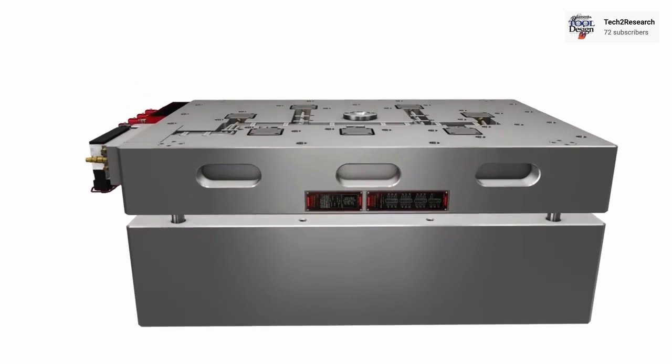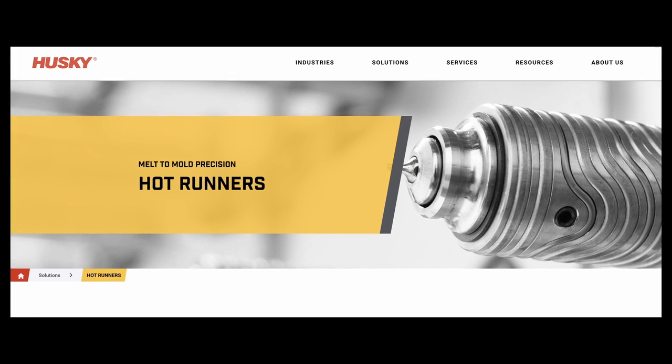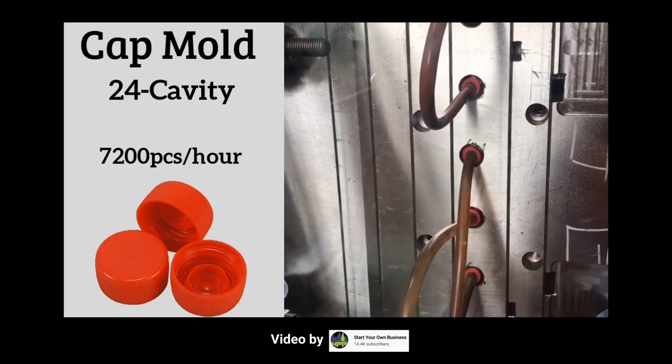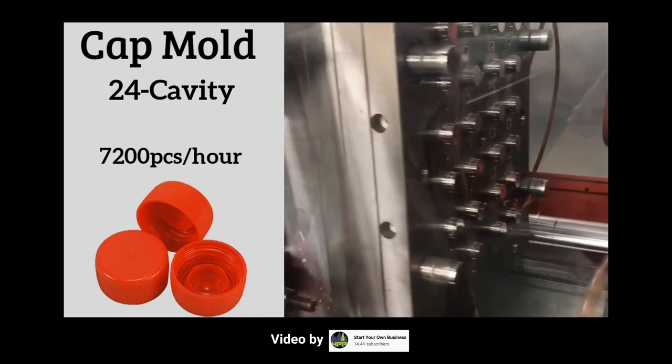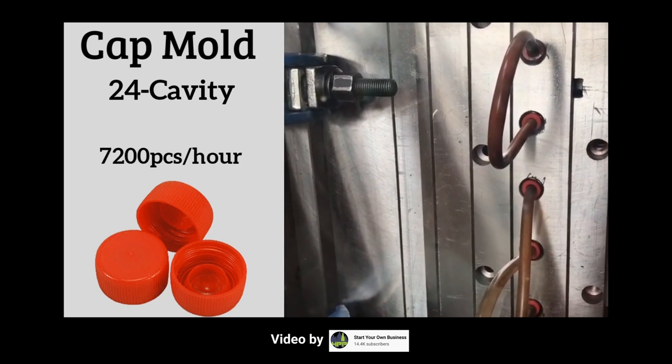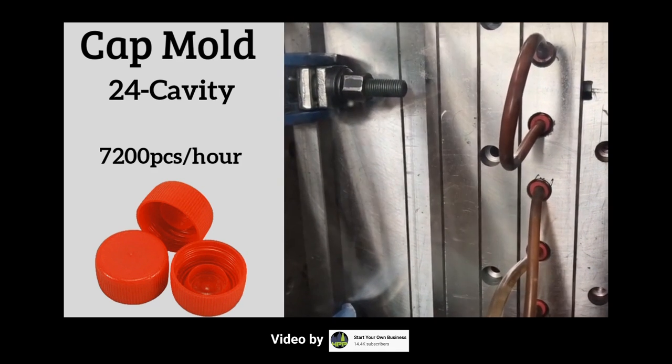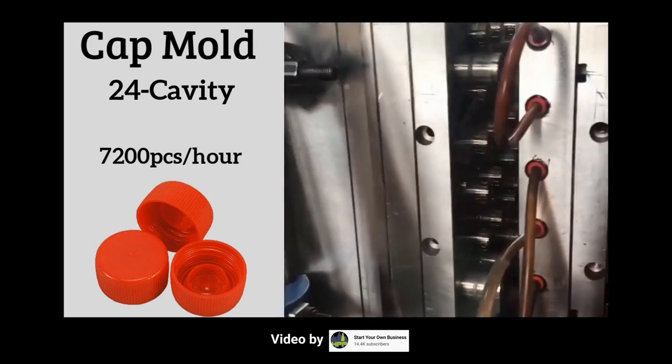Probably the most famous hot runner brand is the Canadian company called Husky. Again, details in the description below. You would still expect one million plus cycles, but because you have many cavities you can multiply that number of cycles by the number of cavities to get the total expected life capacity of the mold. If you have a 16 cavity tool, you should get at least 16 million parts.